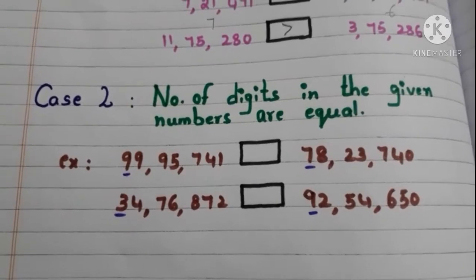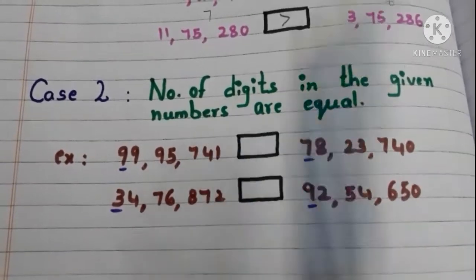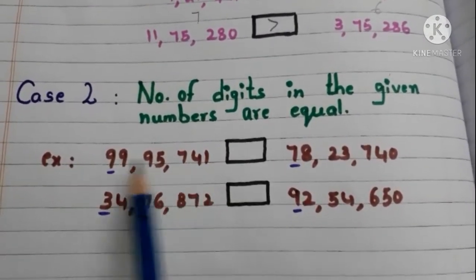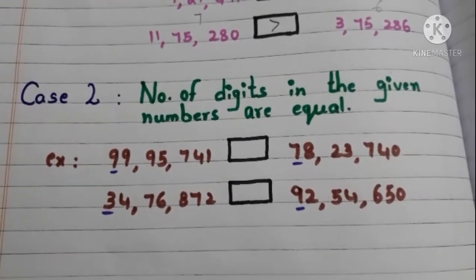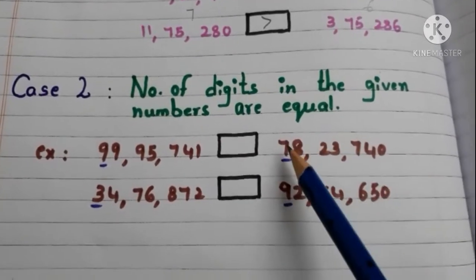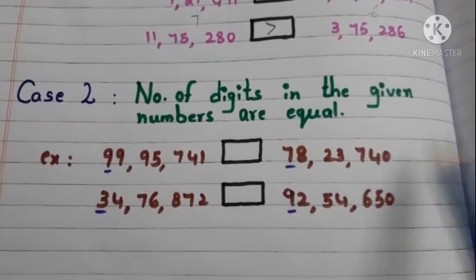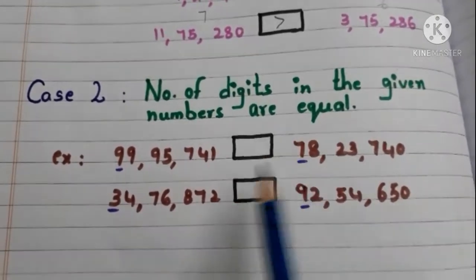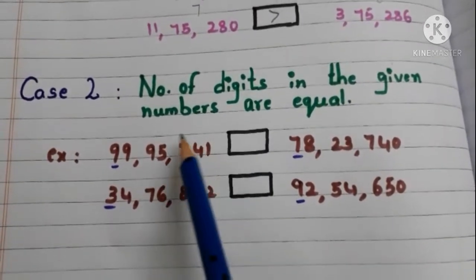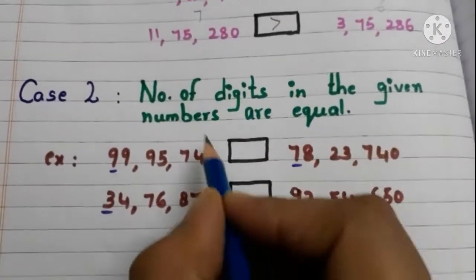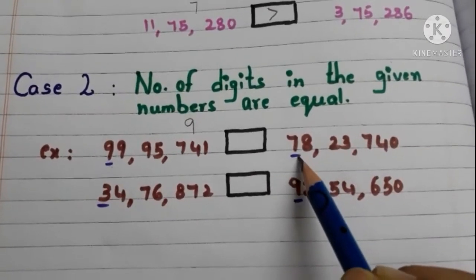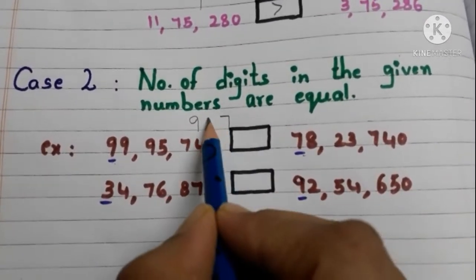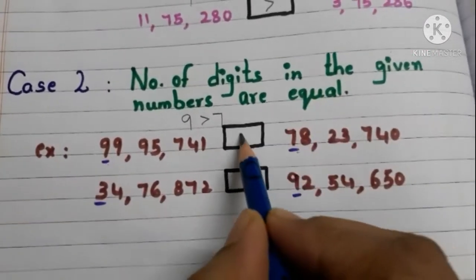Now let us see how to compare 2 numbers when the number of digits in the given 2 numbers are equal. Here we have some examples. Let us do the first one. Both numbers have 7 digits. So what we have to do is compare the highest place value digit — that is, the leftmost digit. Here in this number 9 is the highest place value digit. Now compare 9 and 7. 9 is greater than 7. So this number is greater than this number.